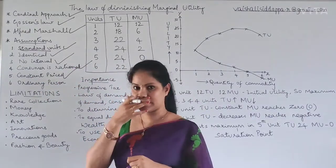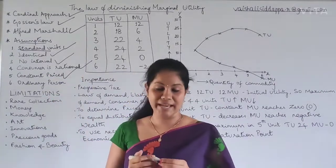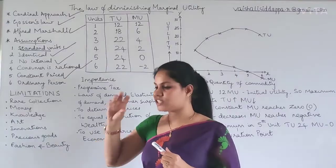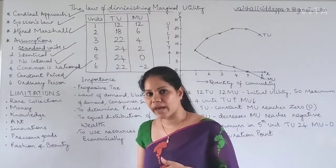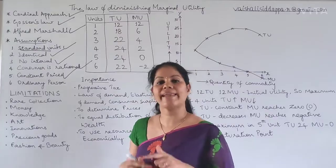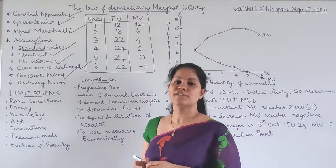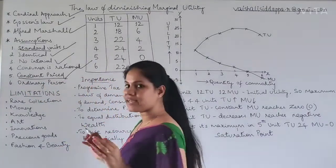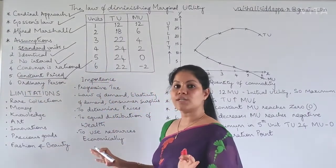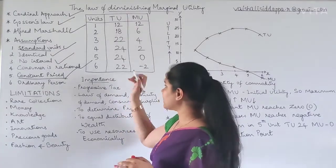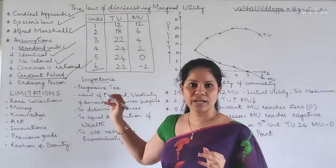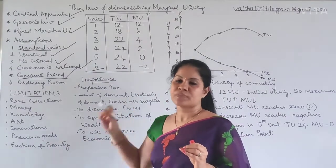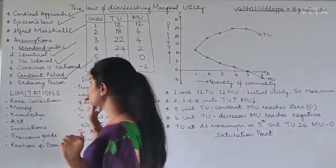Next assumption: constant prices. The prices we are dealing with are very much constant — we are not going to change the price of this apple. If prices vary, automatically demand and consumption will change. That's why we stick to constant prices; the price will not change at all, even up to the sixth unit.